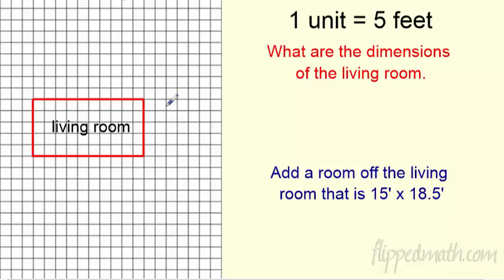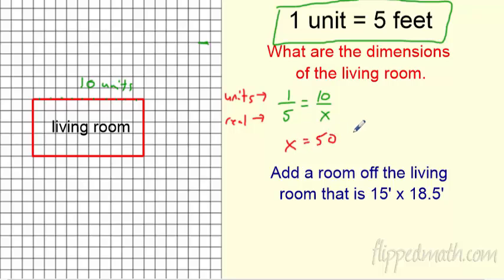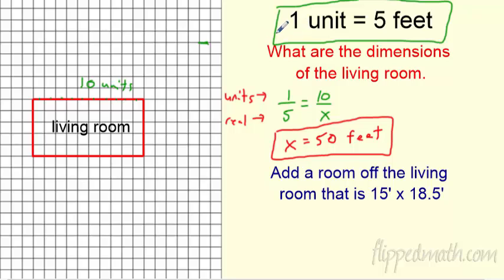Now let's make an actual scale drawing. Here's graph paper with someone's living room. The key says one unit on the graph paper equals five feet in real life. Counting across, the room is ten units wide. I set up a proportion: one unit is to five feet as ten units is to how many feet. Cross-multiplying gives x equals 50 feet. Since the key is one to five, you can also just multiply by five directly.